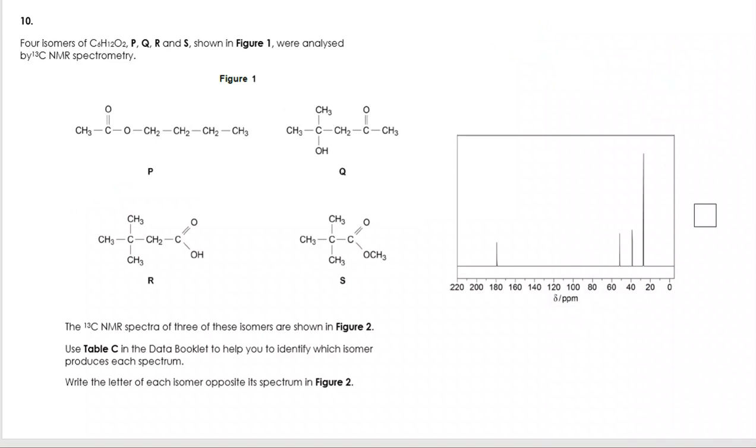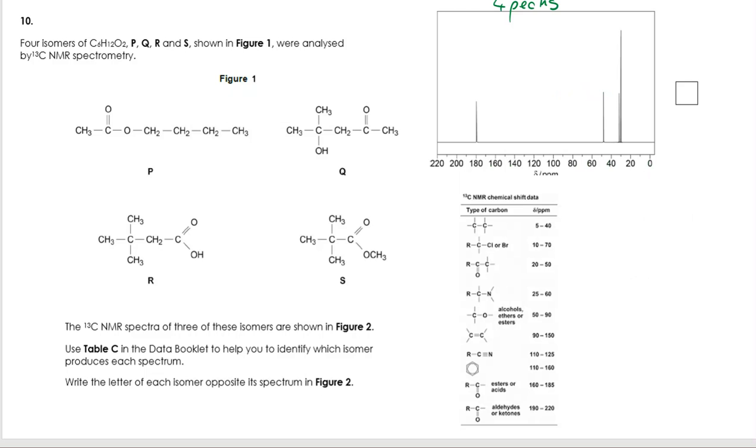We're actually seeing a carbon-13 NMR spectrum here. Four isomers of C6H12O6. Do we think this is P, Q, R or S? If I actually work out the number of environments, you can see that I've got six peaks, five peaks, four peaks, and four peaks. So I can immediately disregard P and Q. What I then need to do is start to take a look at the chemical shifts.